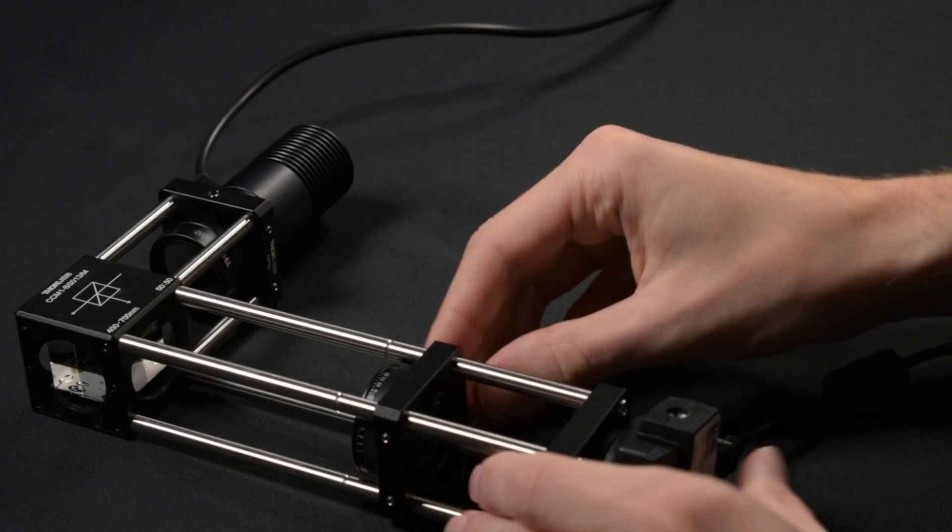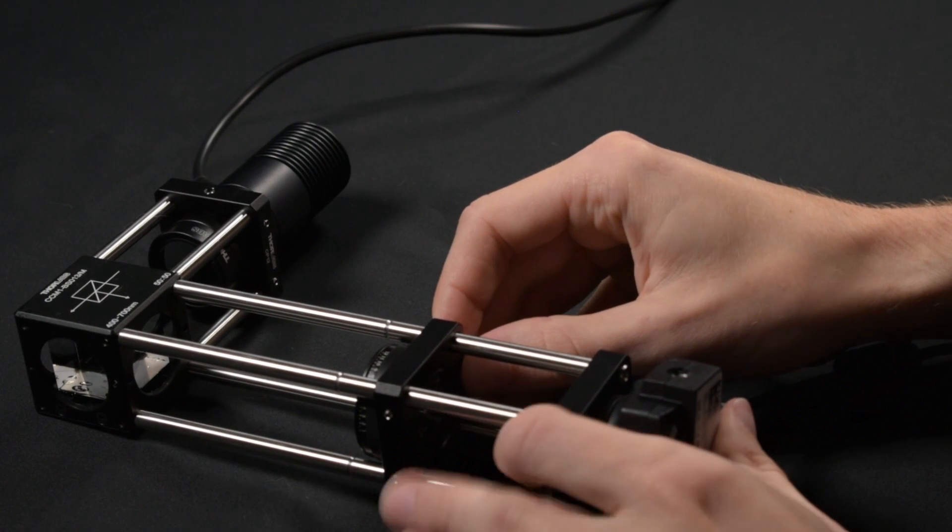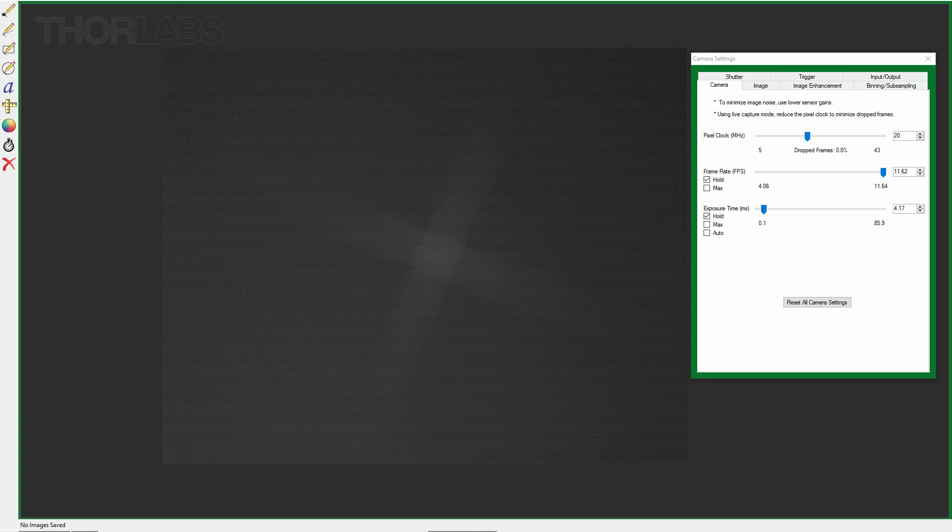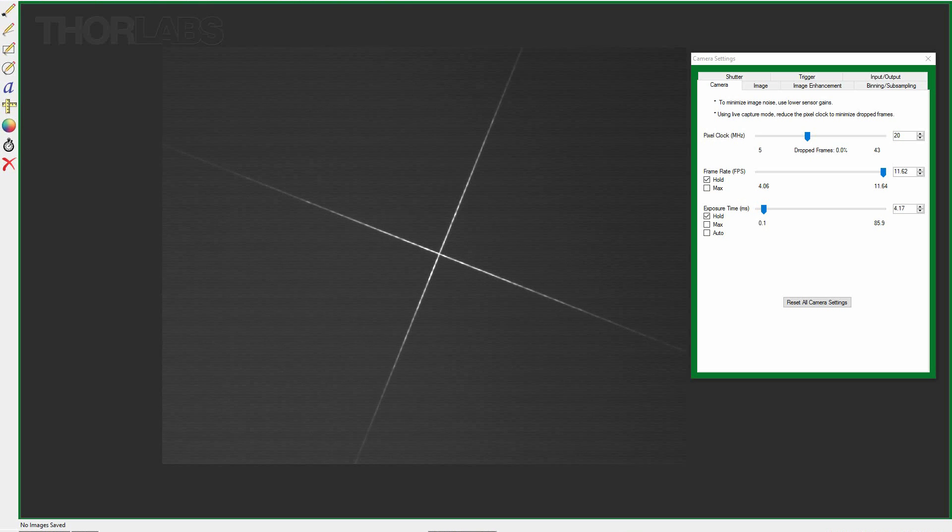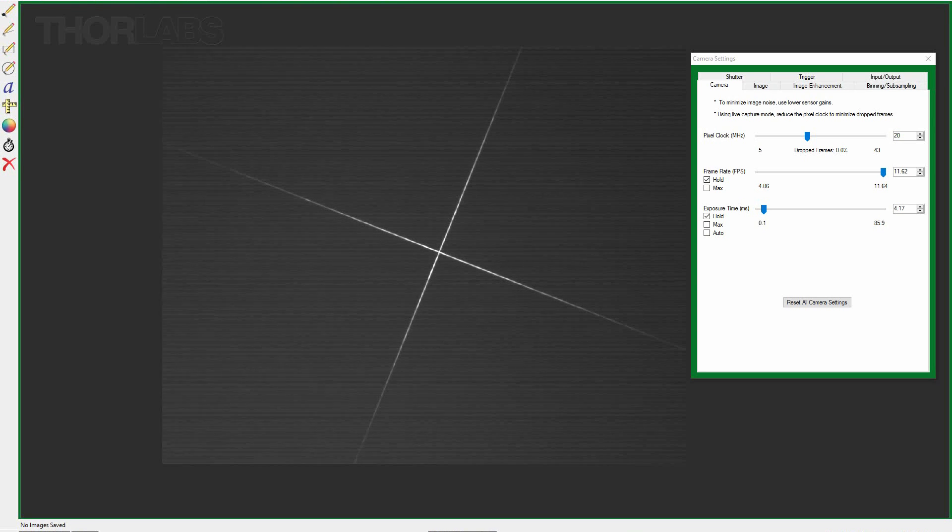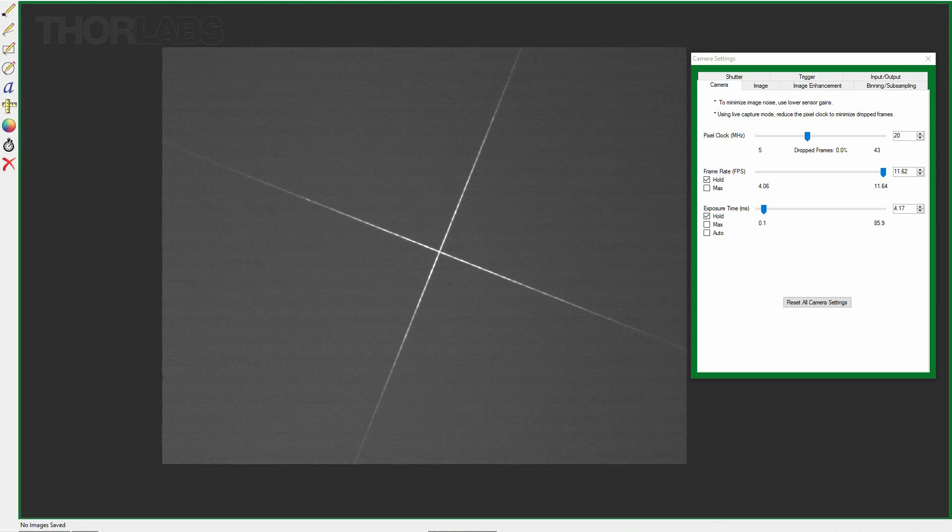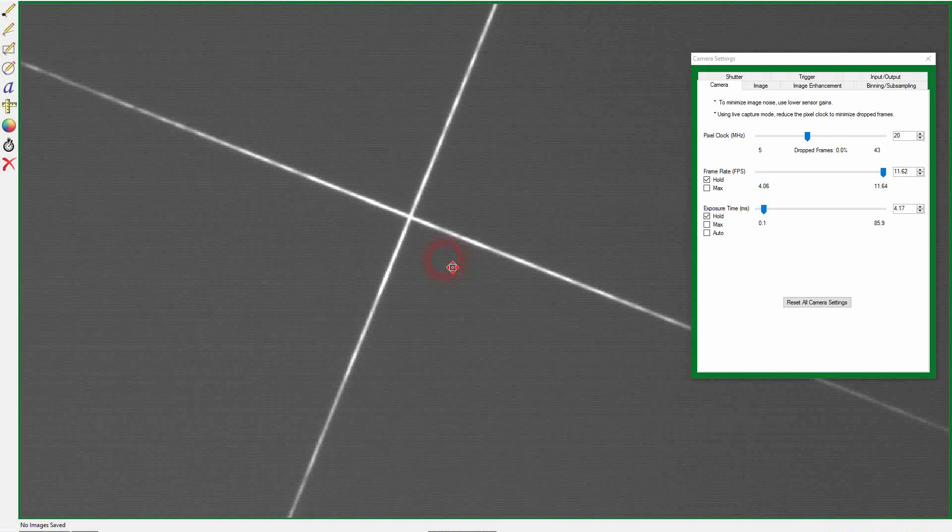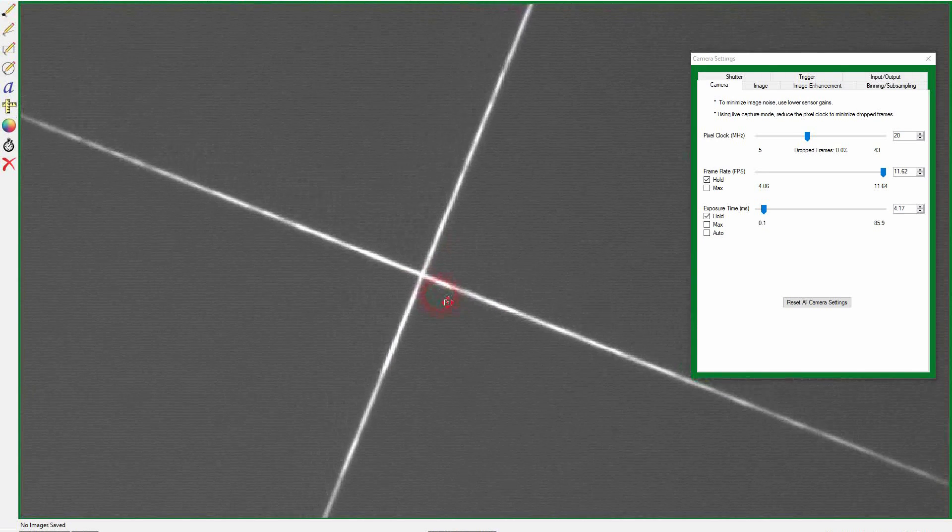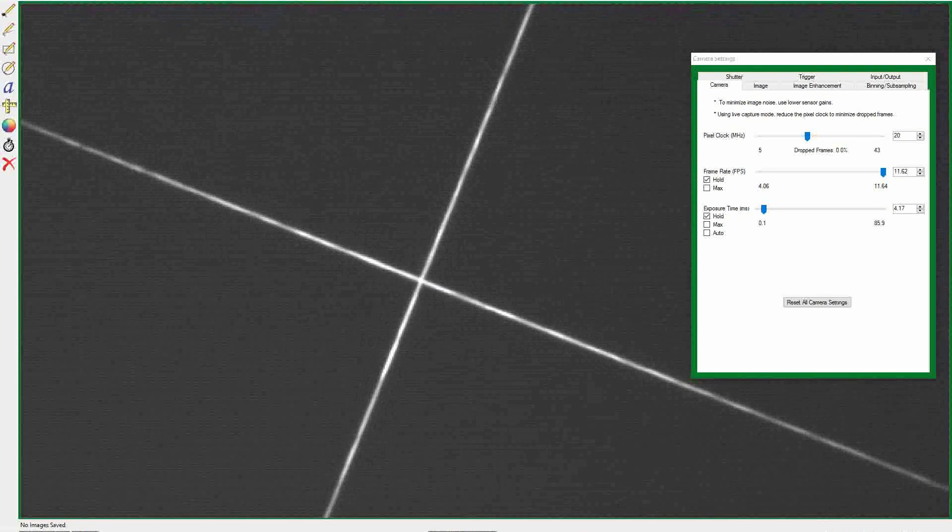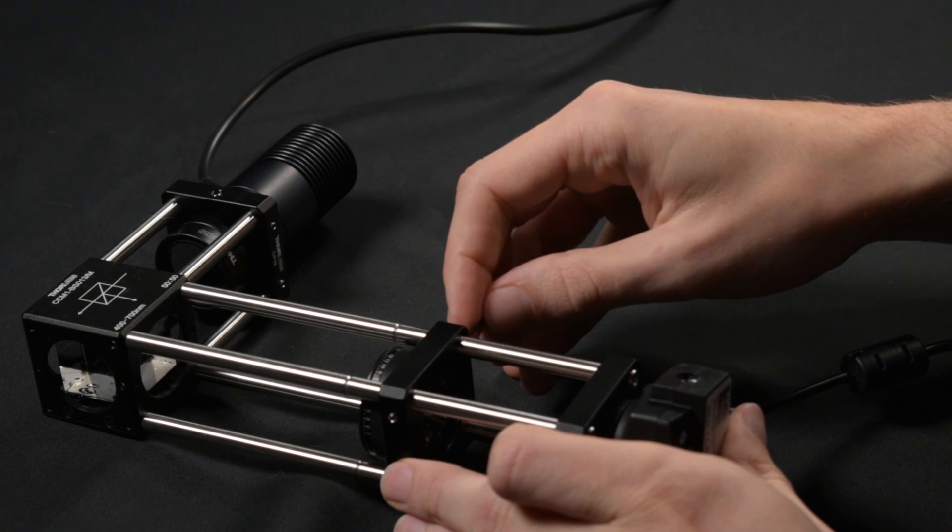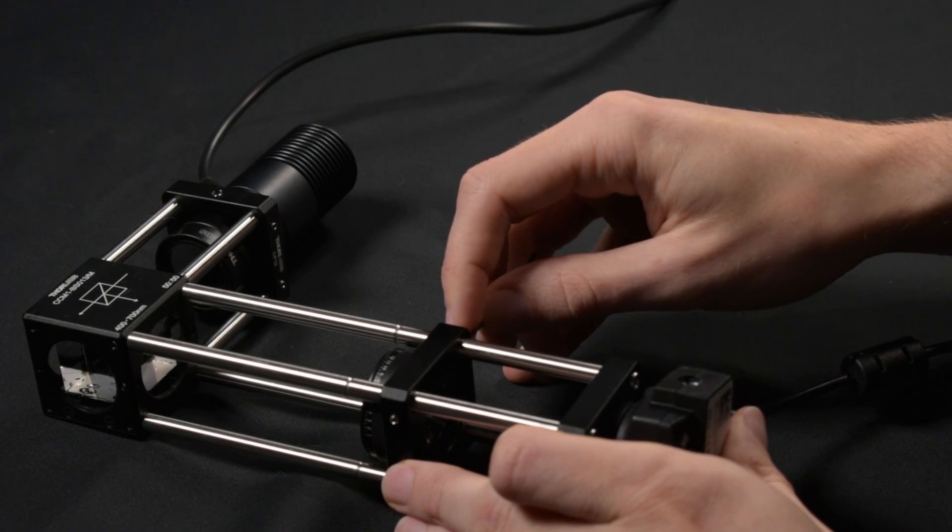We will now fine-tune the imaging lens system to produce a sharp image of the reticle on the camera sensor. Do not hesitate to zoom in to find the best focus position. Once you have found your best focus position, tighten your imaging lens system cage plate.